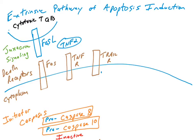Another example is the TNF receptor binding a ligand called TNF-alpha. If you're familiar with immunology, TNF-alpha is a pro-inflammatory cytokine. In some instances, TNF-alpha can engage the extrinsic pathway of apoptosis — not all instances, as in many cases TNF-alpha is just inducing inflammation. But in some cells, TNF-alpha can induce apoptosis. This is an example of a soluble molecule secreted by an immune cell that can engage a receptor causing cells to undergo death.